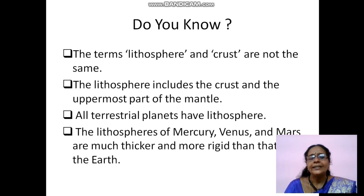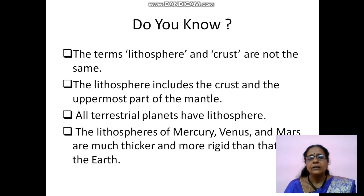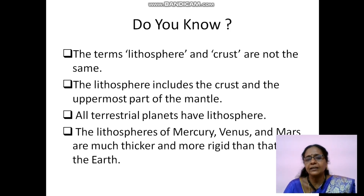Terrestrial means planets nearer to the sun. The lithosphere of Mercury, Venus and Mars are much thicker and more rigid than that of the earth. They may ask a question: which planet's lithosphere is more thicker and more rigid? Mercury, Venus and Mars - their rock is more thicker and more rigid - more hard - than that of the earth. Rigid means very hard.